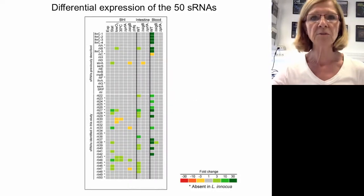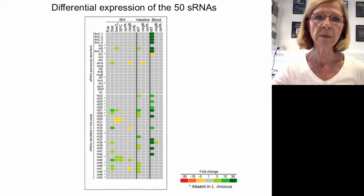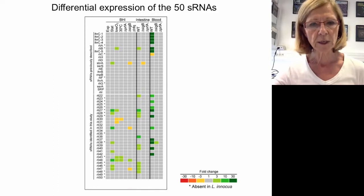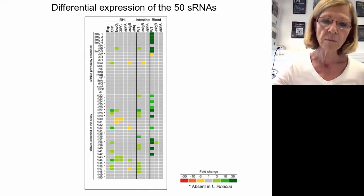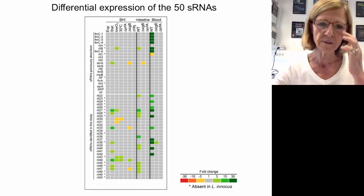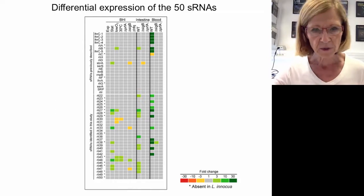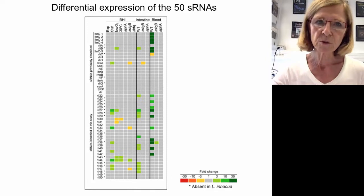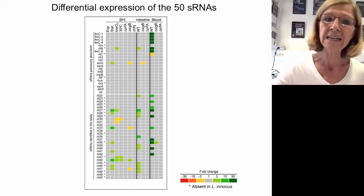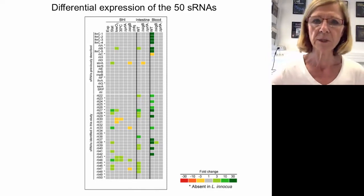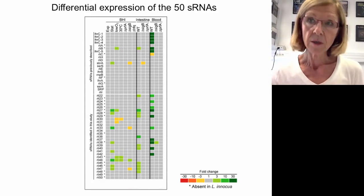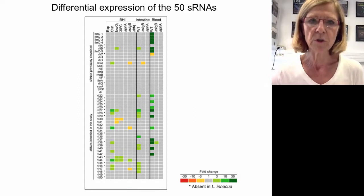We discovered 50 small RNAs that were differentially expressed according to the growth condition. We identified small RNAs present in monocytogenes and absent in innocua. We showed that some of these RNAs were highly expressed in blood, and we were able to describe for the first time the operon map of the bacteria.